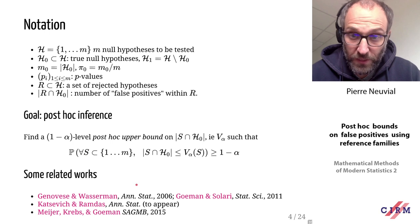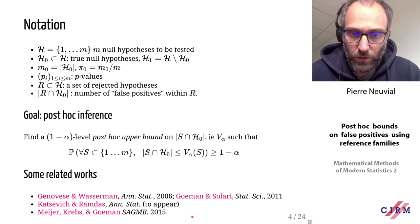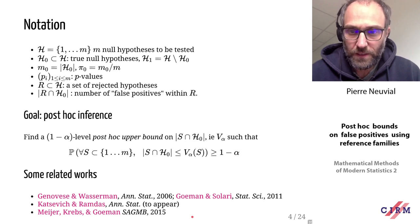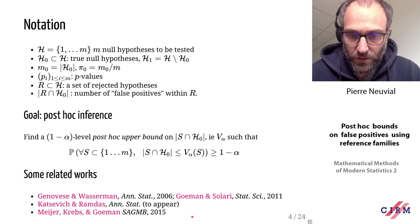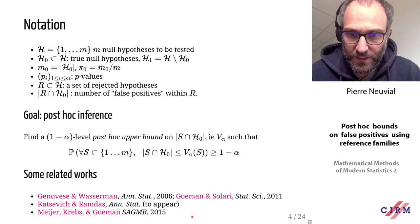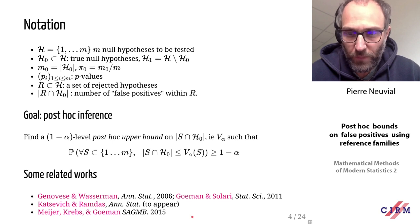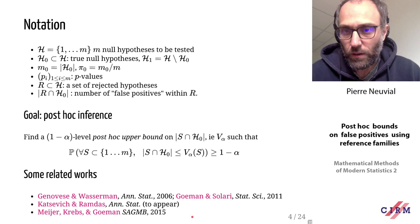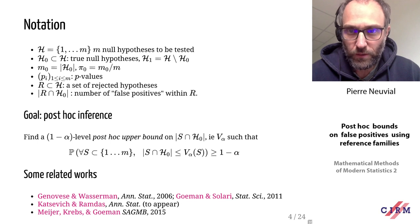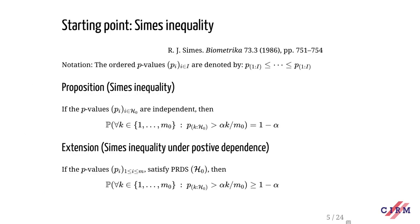Some important related works: Goeman and Solari, and Hemerik and Solari, who popularized post-hoc inference; Katsevich and Ramdas, who worked on p-value level sets; and Meijer, Krebs, and Hemerik, who worked on hypotheses ordered in time or space — a context we also address at the end.